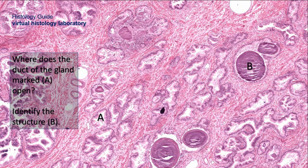Where does the duct of the gland marked A open? We first identify the gland by the presence of prostatic concretions — the laminated structures, corpora amylacea. So this is the prostate gland with its tubulo-alveolar glands lined by cuboidal to low columnar epithelium. These glands open into ducts that open into the prostatic urethra.